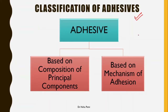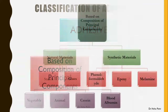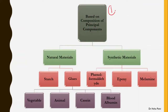Let us go to the classification of adhesives. Adhesives can be classified on two bases: the first is based on the principal component — what material it is made up of — and the second is based on the mechanism of adhesion — how the adhesive works. Based on the principal component, if the major component is natural in nature it is a natural adhesive; if synthetic, it is a synthetic adhesive.